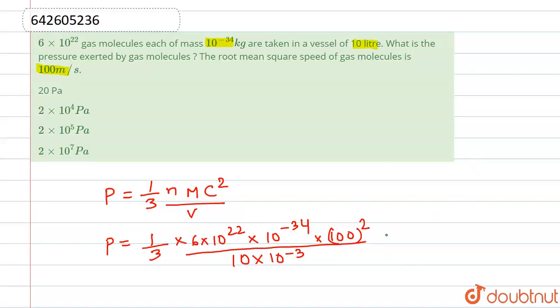Right, so if we can do this, from here we have the value of pressure that comes out is 2 × 10^4 pascal.